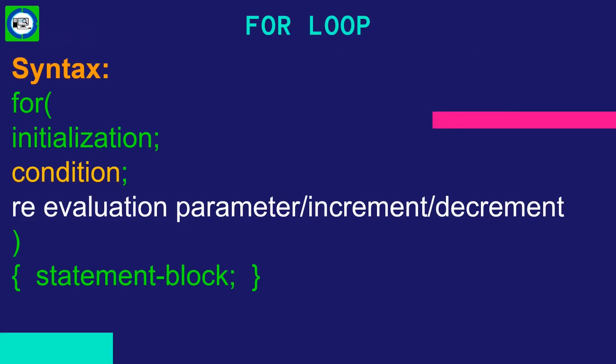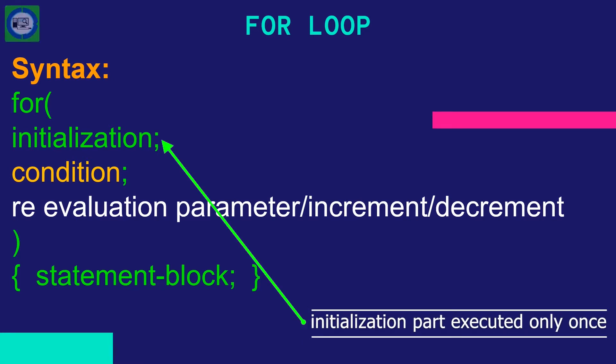A for loop is used to execute a set of statements. It has three parameters: initial value, condition, and re-evolution parameter. A for loop can have more than one initial value and re-evolution parameter, but it contains only one condition.